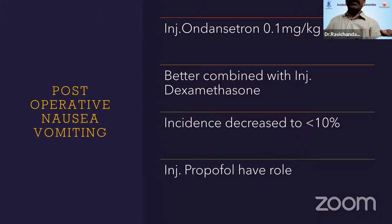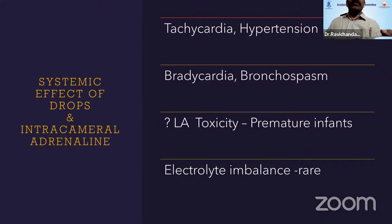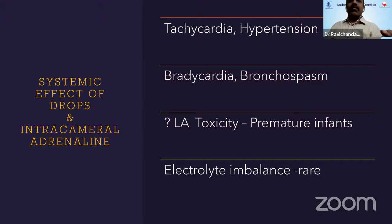For nausea and vomiting, an ondansetron–dexamethasone combination reduces the incidence, and propofol also significantly decreases it. Systemic drops used for dilation can produce tachycardia and hypertension. Beta blockers used for glaucoma control can cause bradycardia and bronchospasm. Electrolyte imbalance can occur when cholinesterase inhibitors are used.